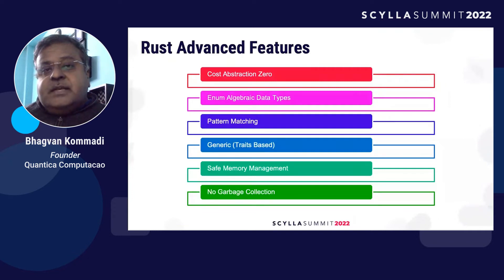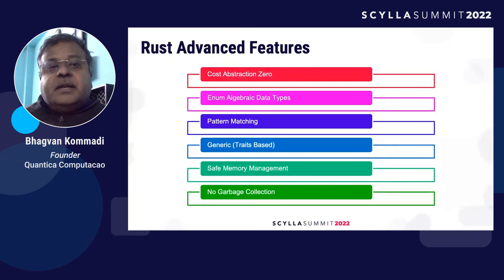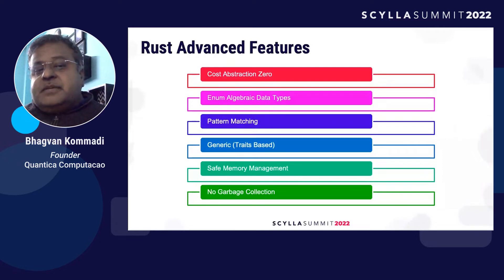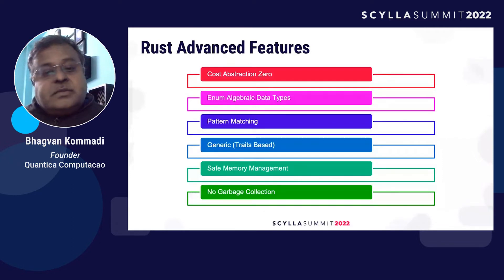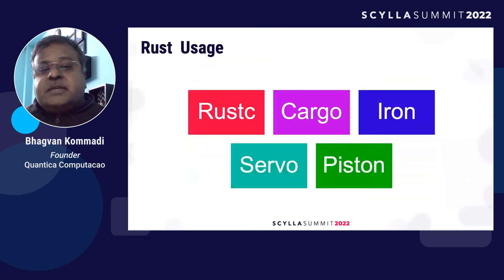Everybody remembers back in the old days with C and C++, something going wrong would immediately produce a core dump segmentation fault. And also, there is no garbage collection in Rust — unlike Java, which has Java garbage collection.